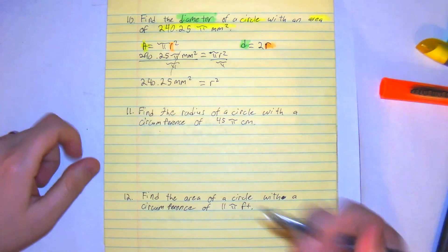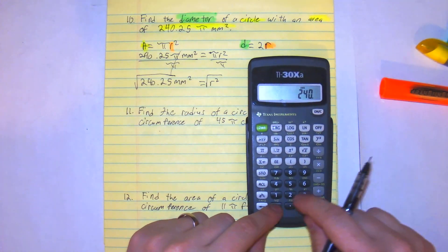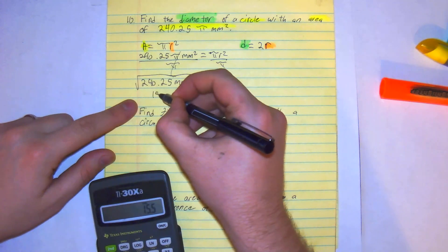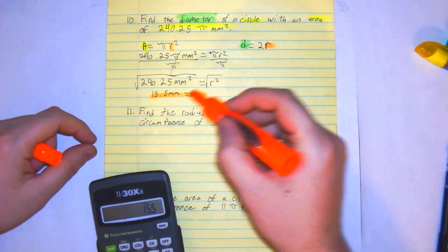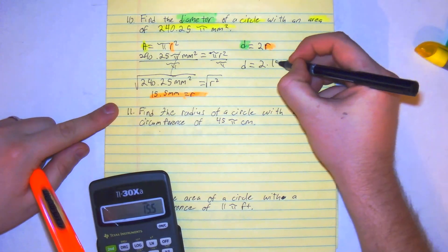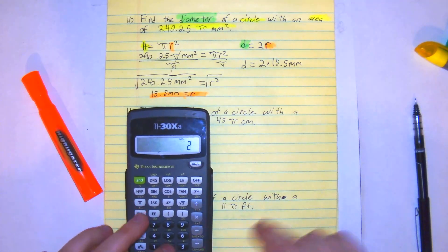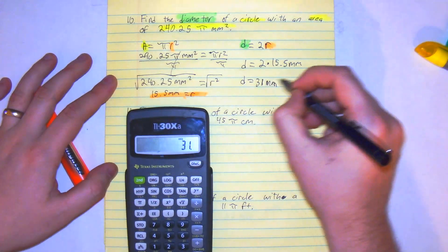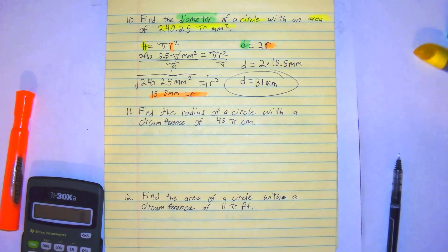The inverse of a square is a square root, so we're going to square root both sides. The square root of 240.25 gets you about 15.5 millimeters. We found our radius, so we're going to plug it in: d is equal to 2 times 15.5 millimeters. 15.5 times 2 gives you 31, so our diameter is 31 millimeters. And that's how you do number 10.